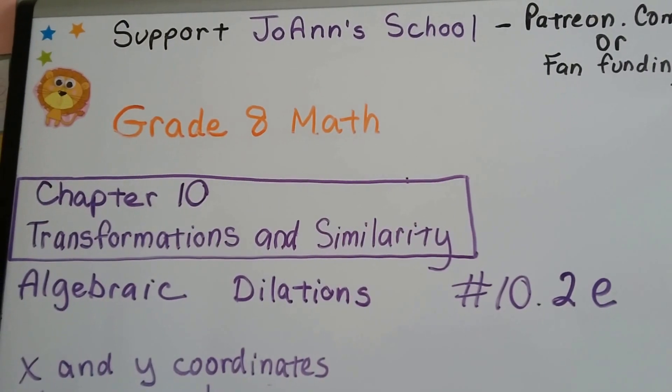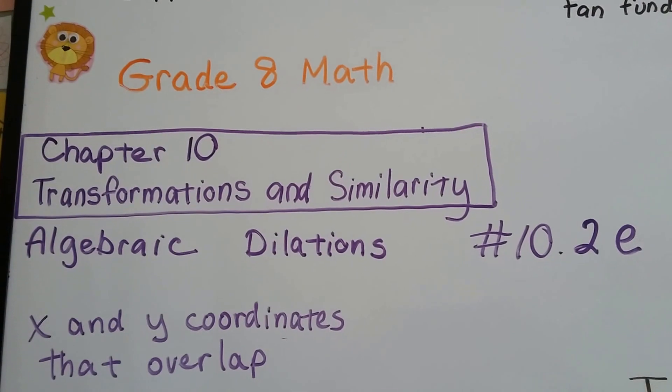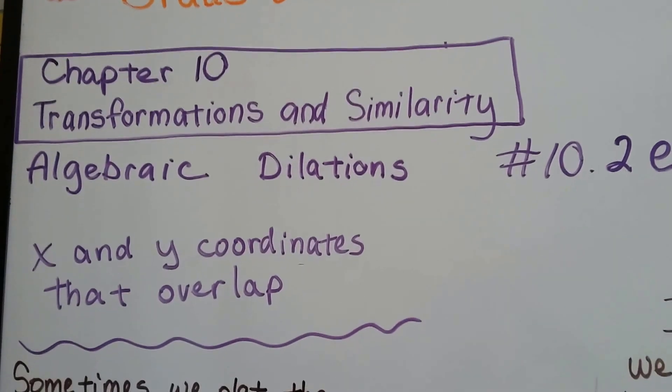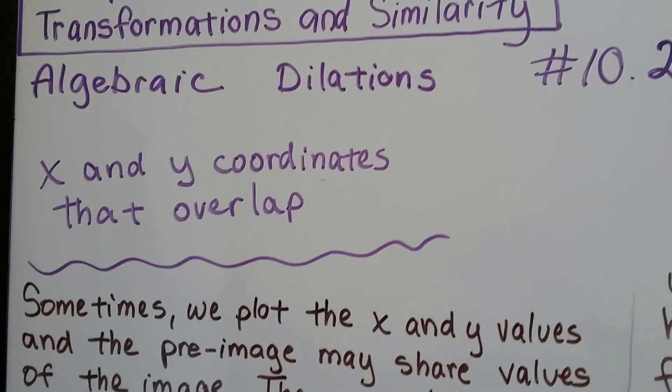Grade 8 math number 10.2e. We're still talking about dilations and now we're going to talk about what happens when the x and y coordinates overlap.